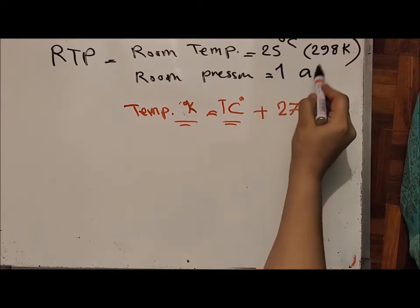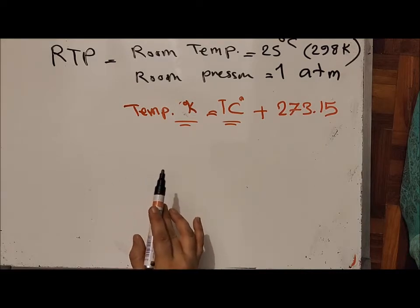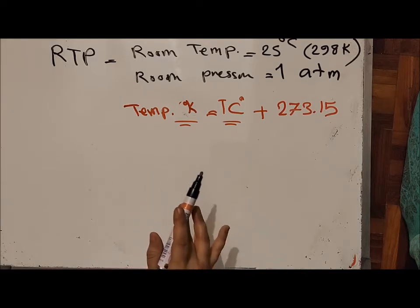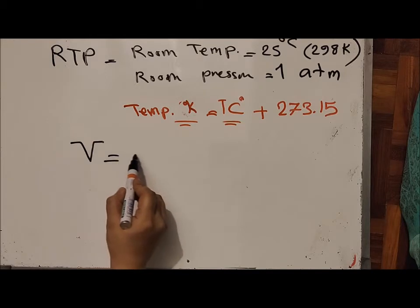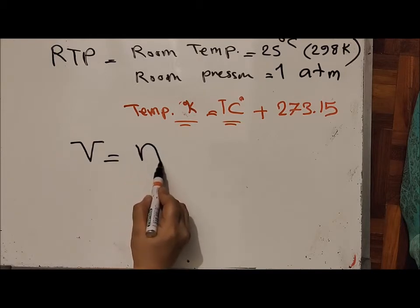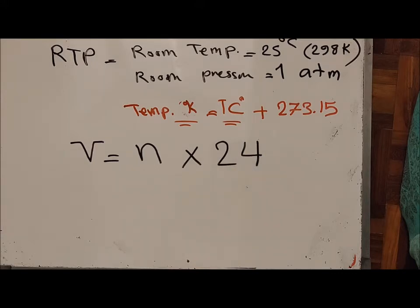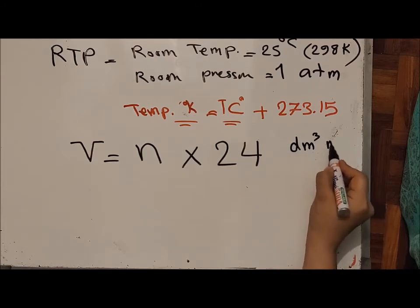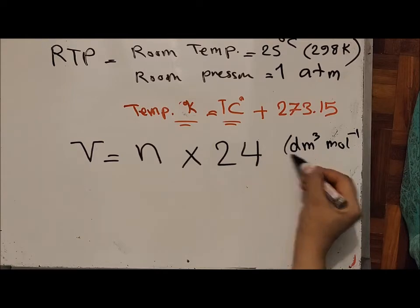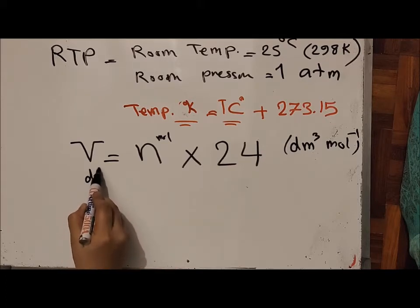Under RTP — room temperature and pressure — the formula to calculate the volume of a gas is: V = n × 24, where 24 dm³/mol is the molar volume. n is in moles, and volume will be in dm³.